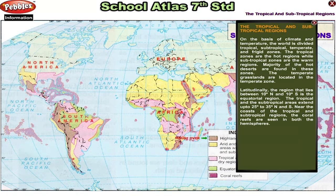Near the coasts of tropical and subtropical regions, coral reefs are seen in both the hemispheres.